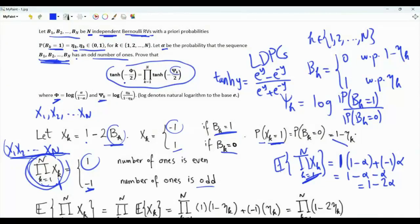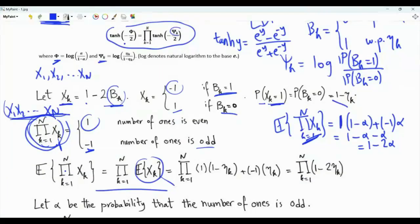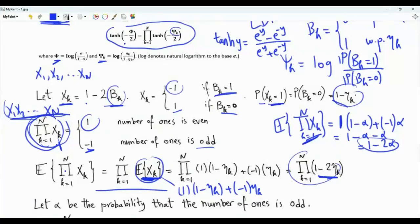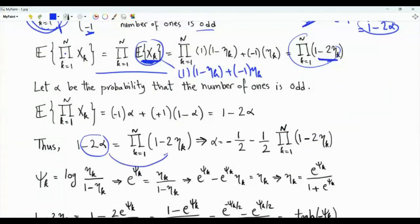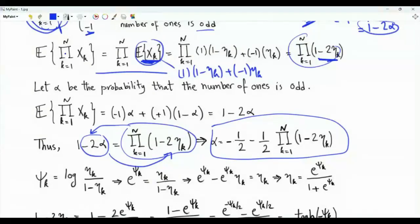We can compute this expectation in a different way. The Bernoulli random variables are independent, and xk is a function of bk, so x1 to xn are also independent of one another. The expectation of the product is the product of expectations. The expected value of xk is: xk equals 1 with probability 1 minus eta_k, and xk equals minus 1 with probability eta_k, so this expectation is 1 minus 2*eta_k. It must be the case that 1 minus 2*alpha equals the product from k=1 to n of (1 minus 2*eta_k). We can rearrange to get the relationship between alpha and the etas.